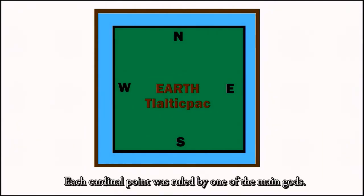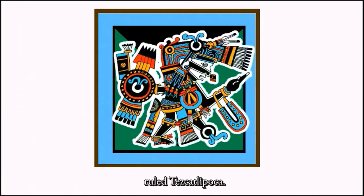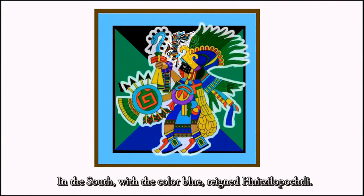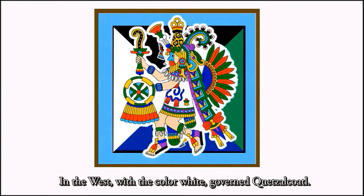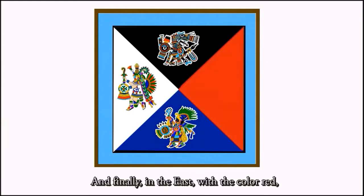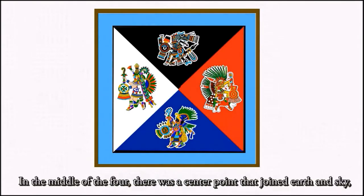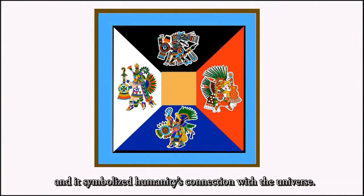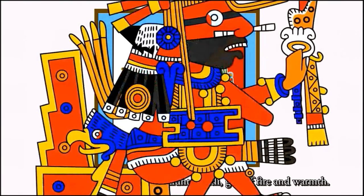Each cardinal point was ruled by one of the main gods. In the north, representing the color black, ruled Tezcatlipoca. In the south, with the color blue, reigned Huitzilopochtli. In the west, with the color white, governed Quetzalcoatl. And in the east, with the color red, ruled Xipetotec. In the middle of the four, there was a center point that joined earth and sky, the underworld and the heavens, and it symbolized humanity's connection with the universe. It was ruled and guarded by Xiuhtecuhtli, god of fire and warmth.